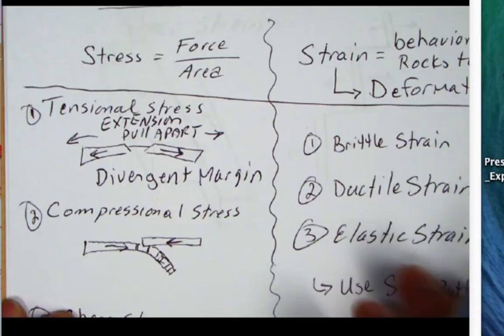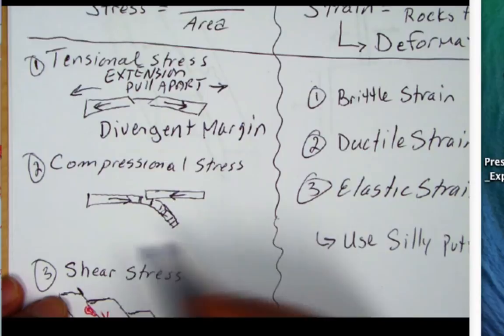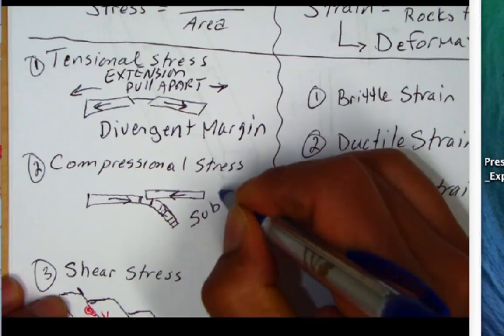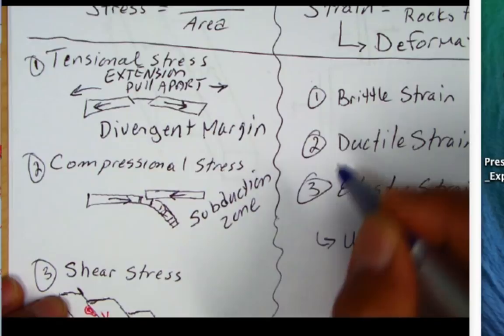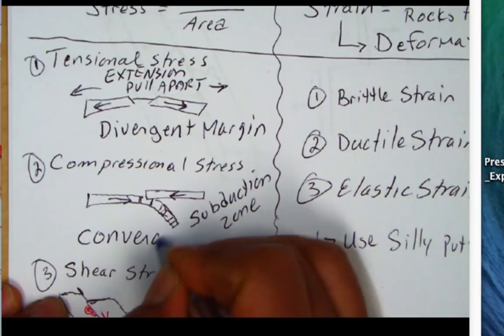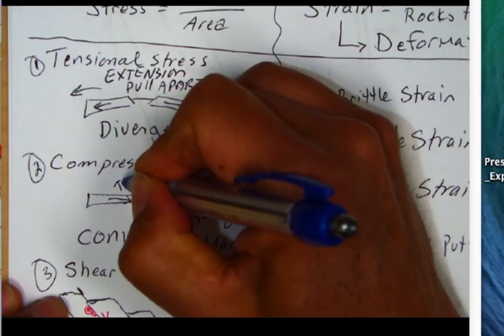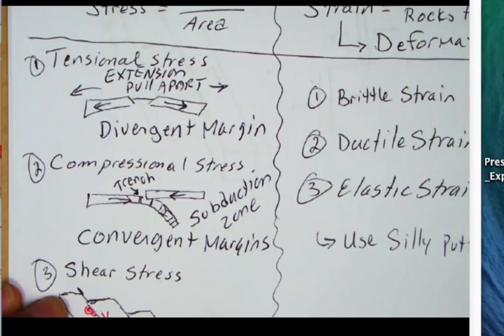The next stress is compressional stress, where two forces are moving toward each other. One tectonic plate will dive beneath the other — we call this subduction. In that subduction zone, we see a convergent margin. At these margins, we'll see an ocean trench. There will always be a trench involved in a convergent margin. Here in northern California, north of Mendocino, there is a convergent margin — the Cascadia subduction zone.